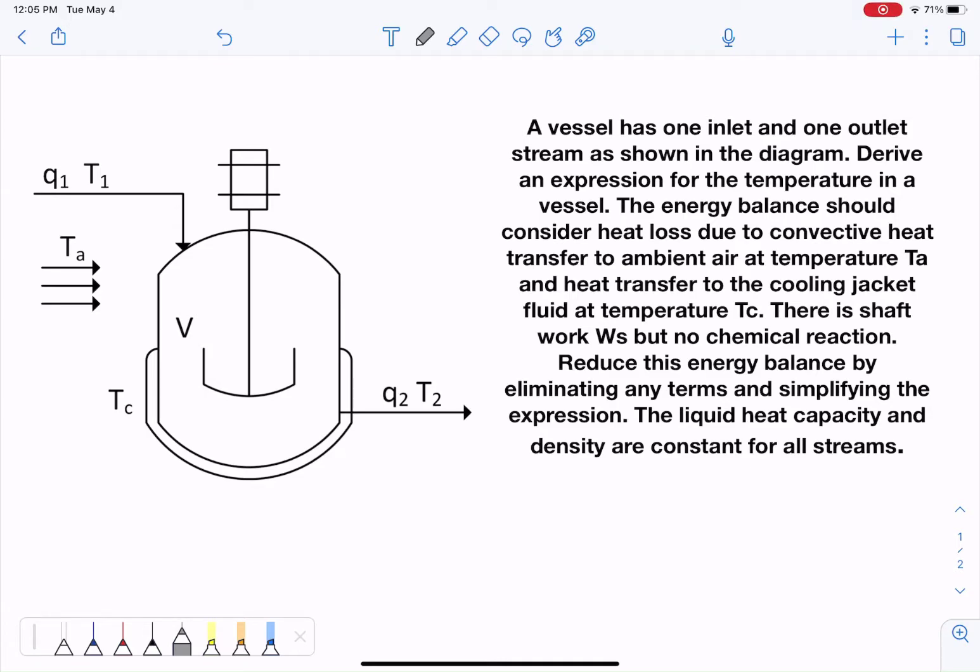In this exercise, I'll go along with you and we'll derive an expression for the temperature in a vessel. We'll use our 12 dynamic steps to do so. Or I should say, our 12 steps in dynamic modeling. So the first step is to do exactly what we just did, identify an objective for our simulation. In this one, we're going to derive an expression for the temperature in a vessel.